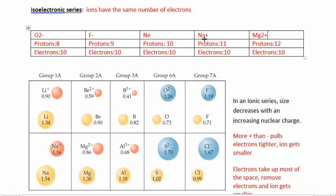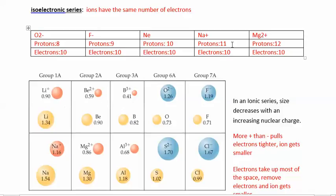Now we want to compare their sizes. Who has the most number of protons? Magnesium has 12 protons and only 10 electrons — everyone has 10 electrons. But magnesium has 12 protons, so it's the most positive. It has the most protons in its nucleus and the strongest pull on those electrons, so it's probably going to be the smallest. And in this chart, magnesium 2 plus is indeed the smallest of the ions listed.